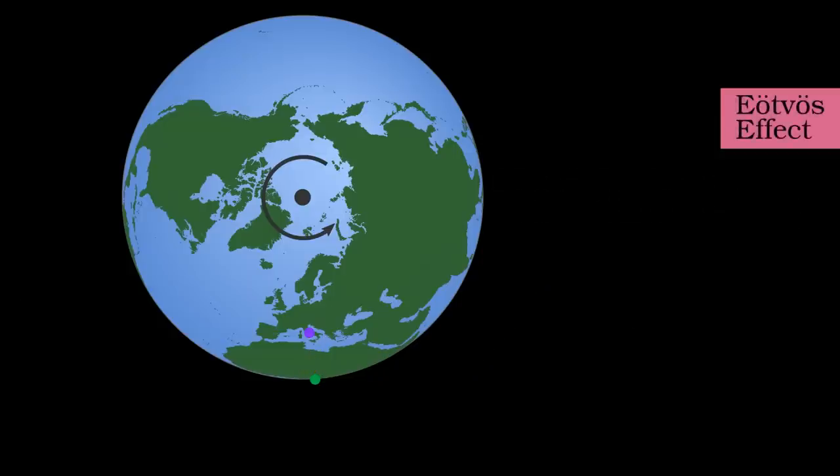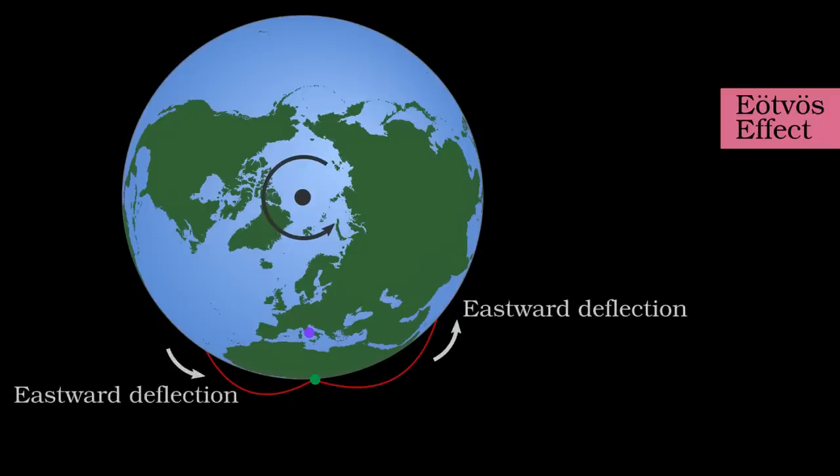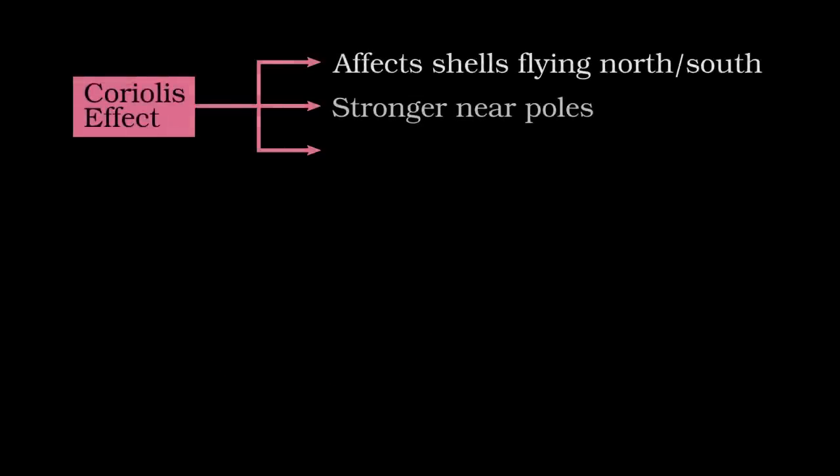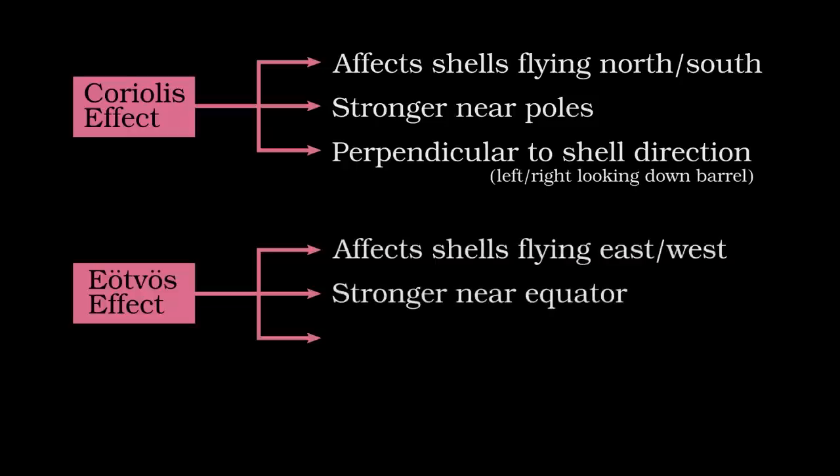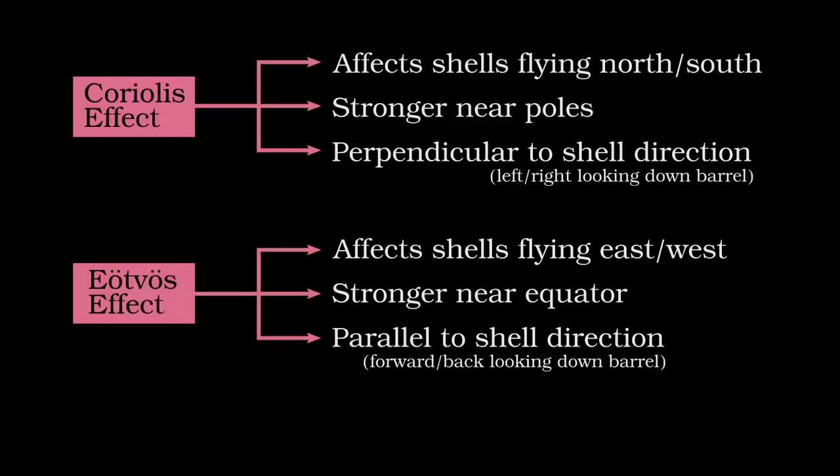Another consequence of the Earth's rotation is the Eötvös effect. As the trajectory takes the shell upwards and forwards, the Earth curves away below. Shells flying to the east are deflected upwards and go further, while shells flying westwards drop short. The north-south Coriolis effect is greater near the poles, while the east-west Eötvös effect is greater at the equator. The total effect on the shell therefore depends strongly on where the artillery piece is located and the direction it's firing.